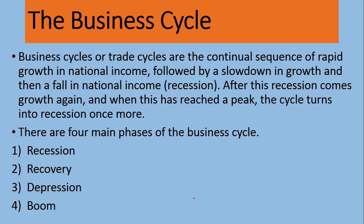The next variable is the business cycle. As the name suggests, a cycle means there are certain positions in it. Business cycles — sometimes called trade cycles — are the continual sequence of rapid growth in national income, followed by a slowdown in growth, then a fall in national income called a recession. After recession comes growth again, reaching a peak, and then the cycle turns into recession once more. There are various phases in the business cycle: recession, recovery, depression, and boom.